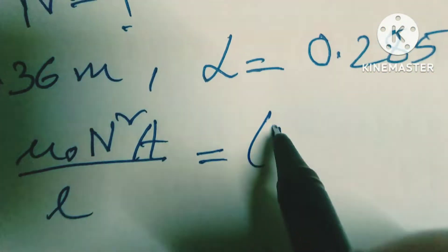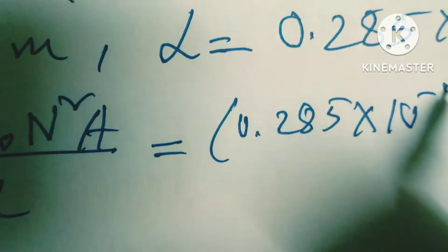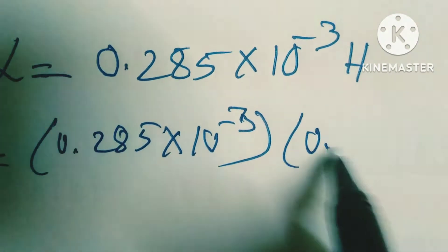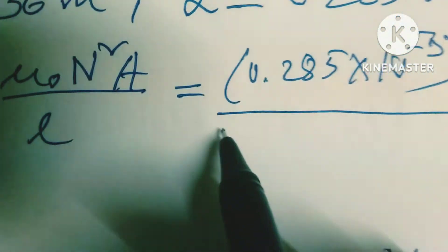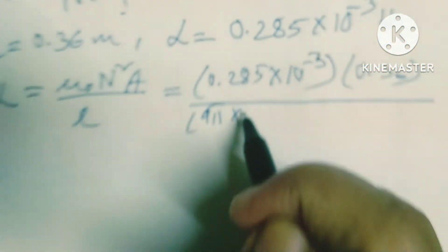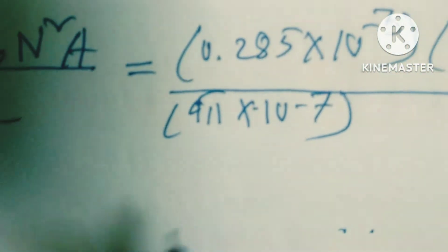So N² equals (0.285×10^-3 × 0.36) divided by (4π×10^-7 × 6×10^-4).